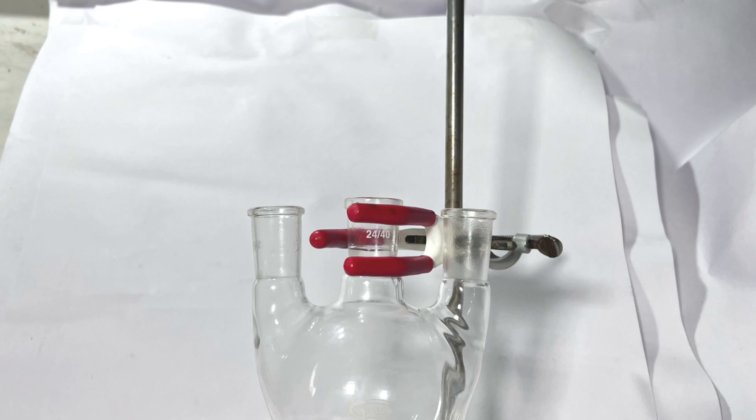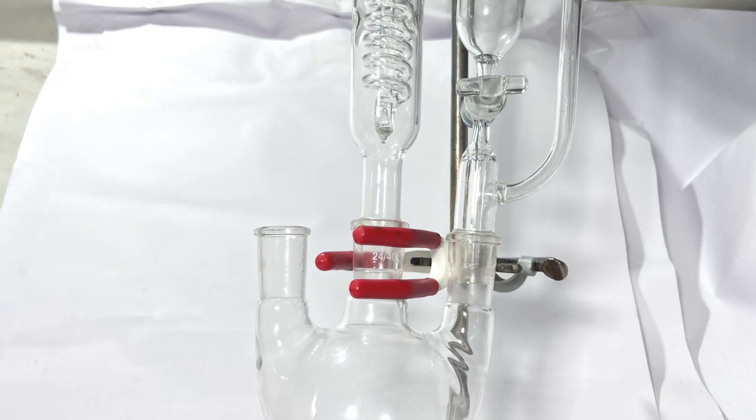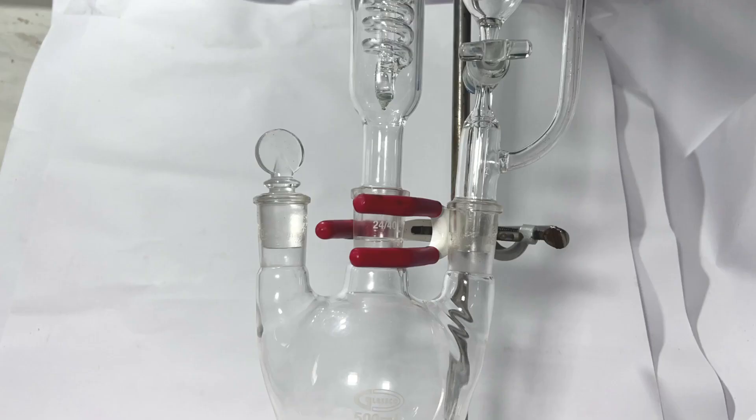A pressure equalizing addition funnel was attached to one of the side necks. A Dimroth condenser was attached to the center neck and a penny head stopper was placed on the other neck.